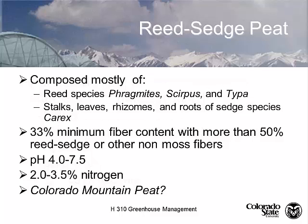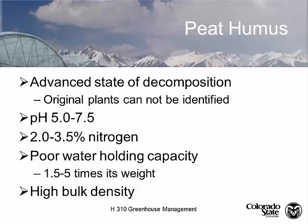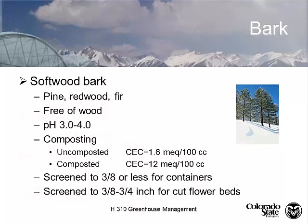Reed sedge peat comes from reeds and sedges — Phragmites, Scirpus, Typha. It needs 33% fiber content with more than 50% reed sedge and other moss fibers. Reed sedge peat is probably the least consistent of all the peats you can buy. Peat humus is the most highly degraded form — from many European areas — in an advanced state of decomposition where you can't tell what the plants were. pH is 5 to 7.5, and it has poor water holding capacity and a high bulk density, so it's not typically used.